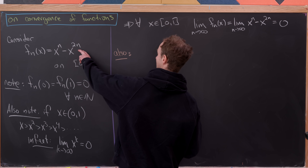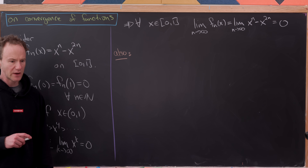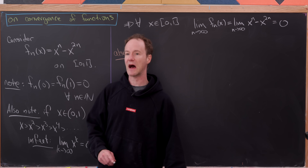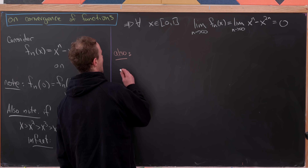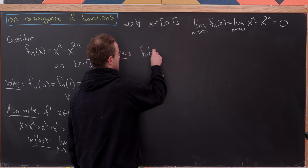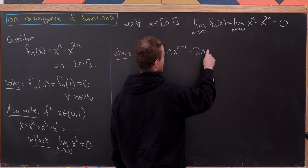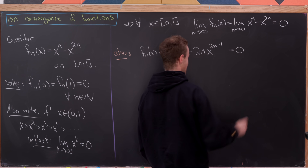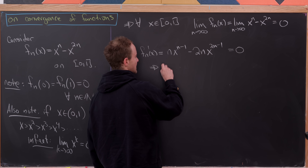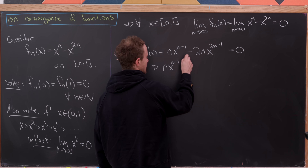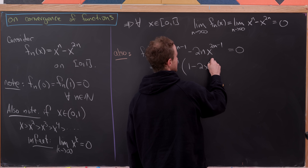Let's find the maximum value and where it occurs for all of these f sub n functions. We have a continuous function on a bounded domain, and by the extreme value theorem we know a maximum exists. Taking the derivative gives us n times x to the n minus 1 minus 2n times x to the 2n minus 1, which we set equal to 0 to find critical points.